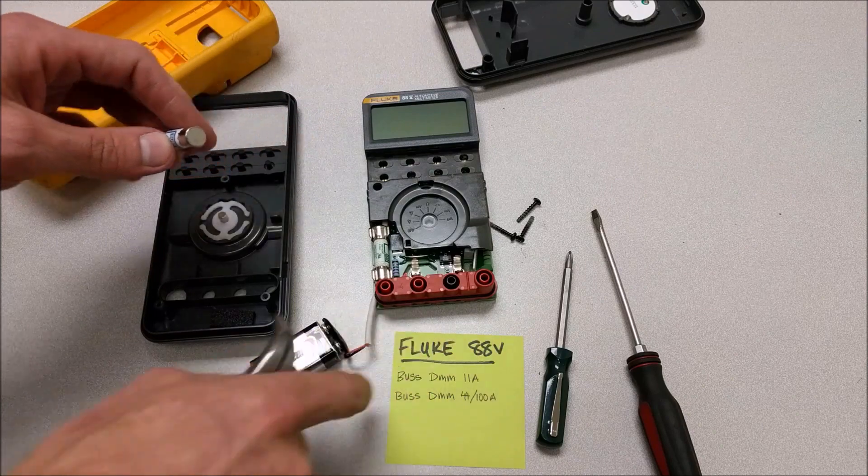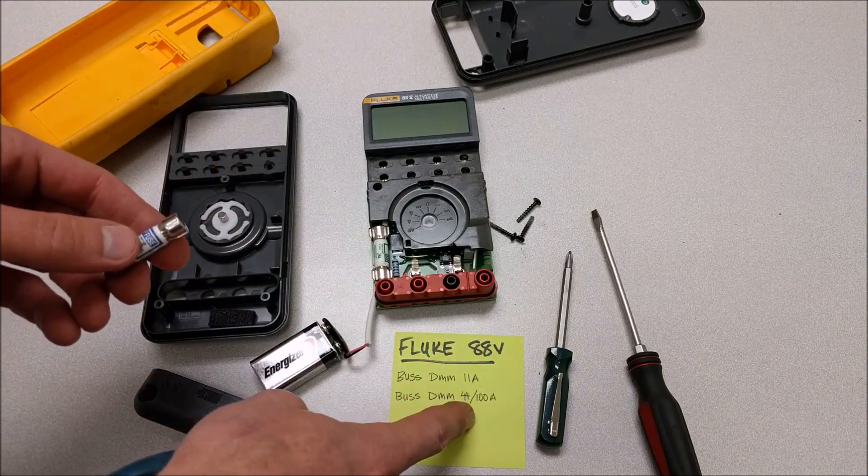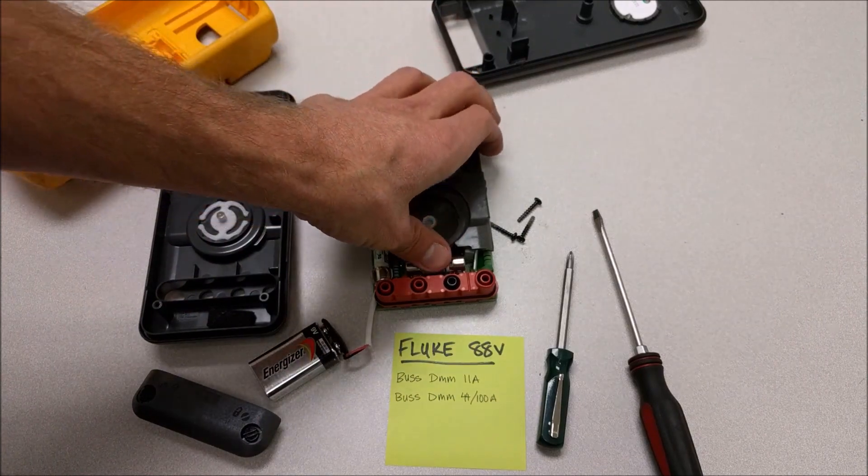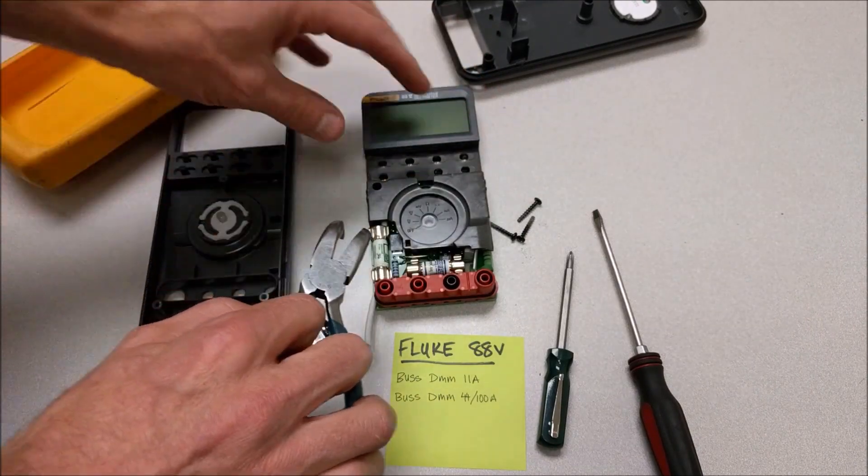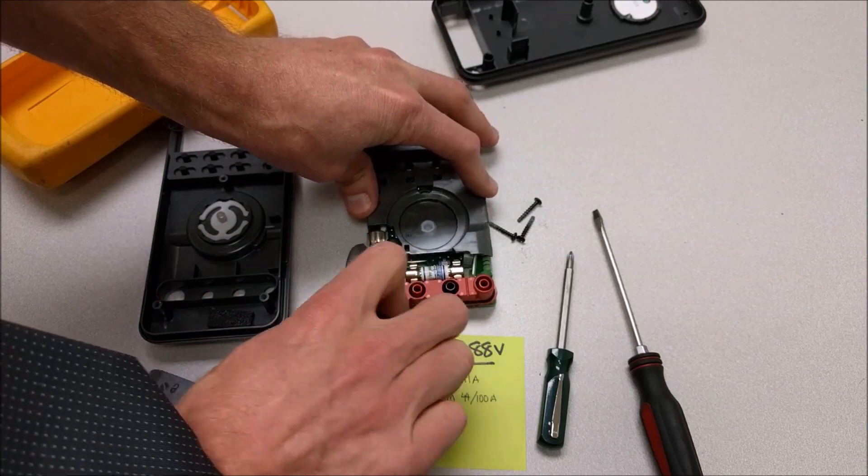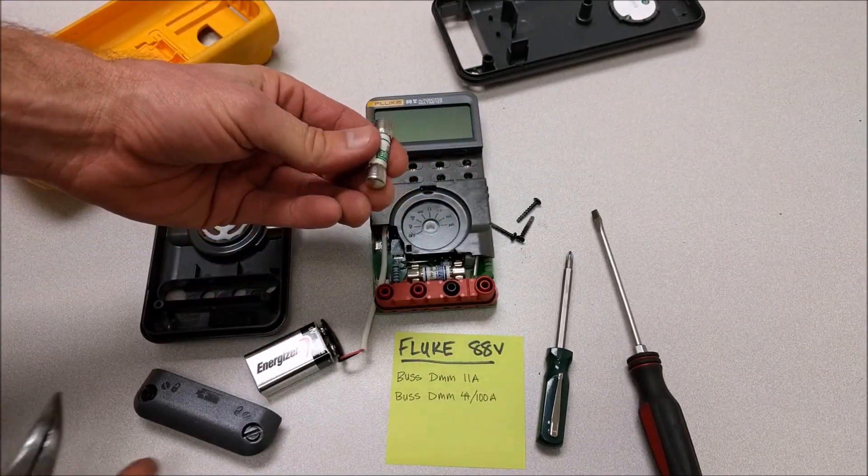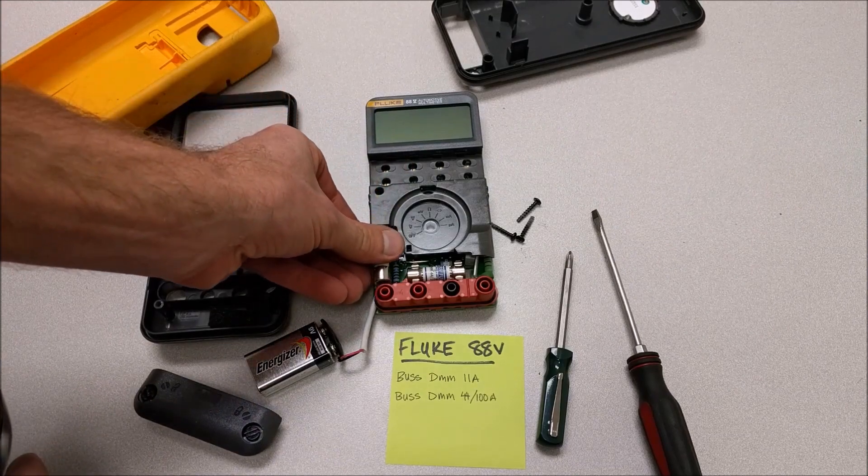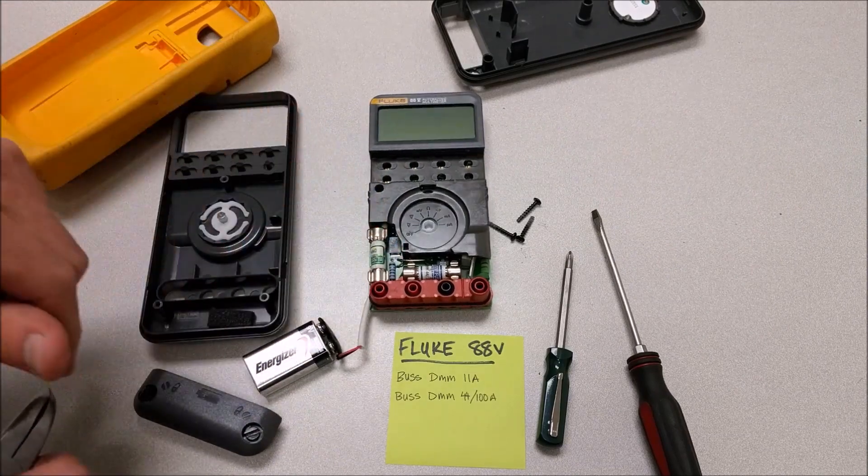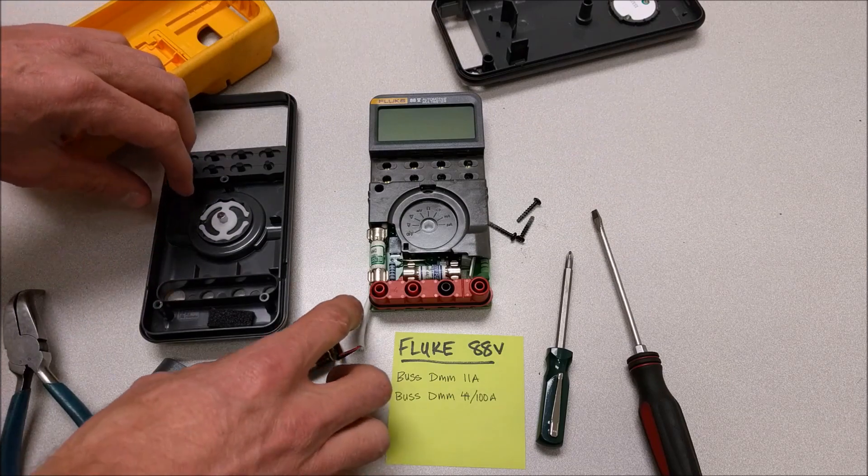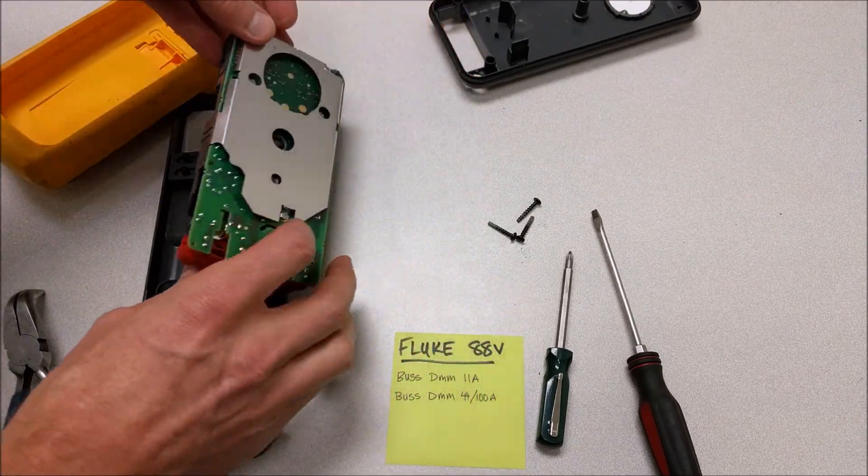On this Fluke 88V, you've got a DM44100A. That's the small one. And this one here is a DM11A, so it's an 11 amp fuse. And the other one is a 440 milliamp fuse. So they're rated just slightly higher than what they're labeled at on the front of the meter. So that's how you would take care of the fuses on the Fluke.